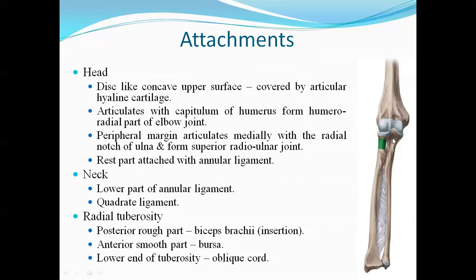Now attachments. The head articulates to form the radial part of the elbow joint, covered by articular cartilage. The neck has the annular ligament and the quadrate ligament attached to it.